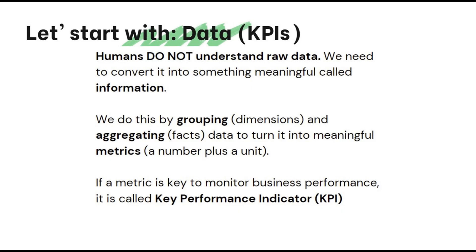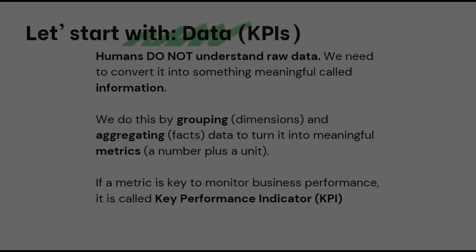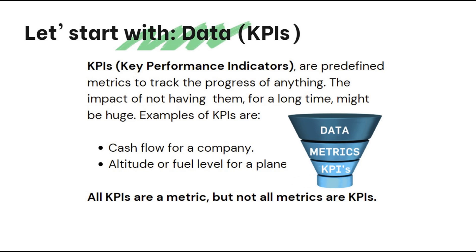We, humans, do not understand raw data. We need to process that data and convert it into information by grouping and aggregating this data to create metrics. If a metric is very important for a business, it is called a key performance indicator. A KPI is a predefined metric to track the progress of something important for a business — for example, cash flow, because a company might die if they don't know their cash flow at all times. All KPIs are metrics, but not all metrics are KPIs.